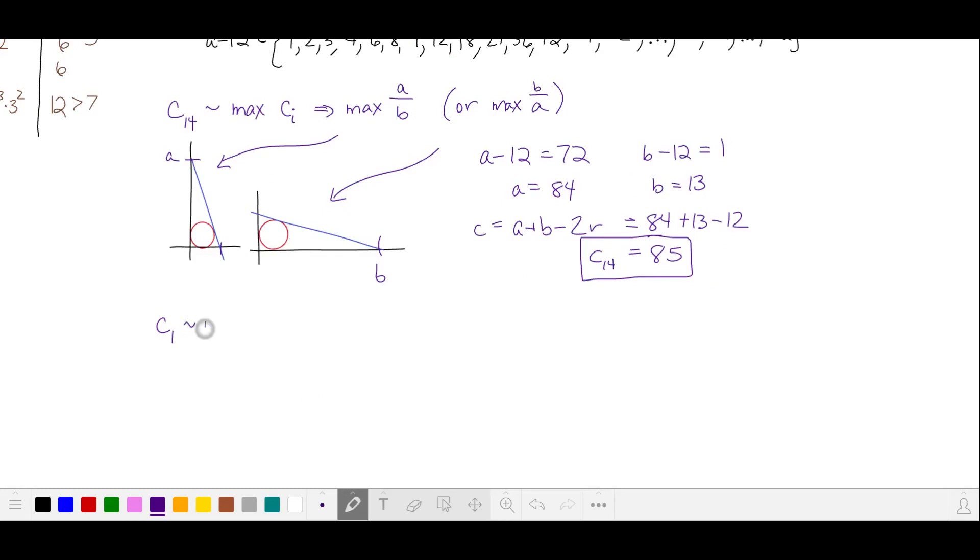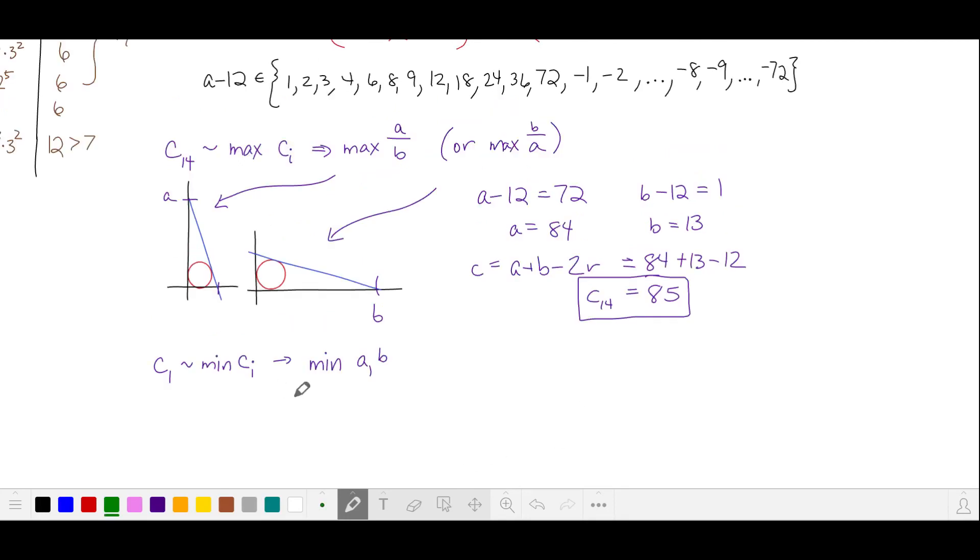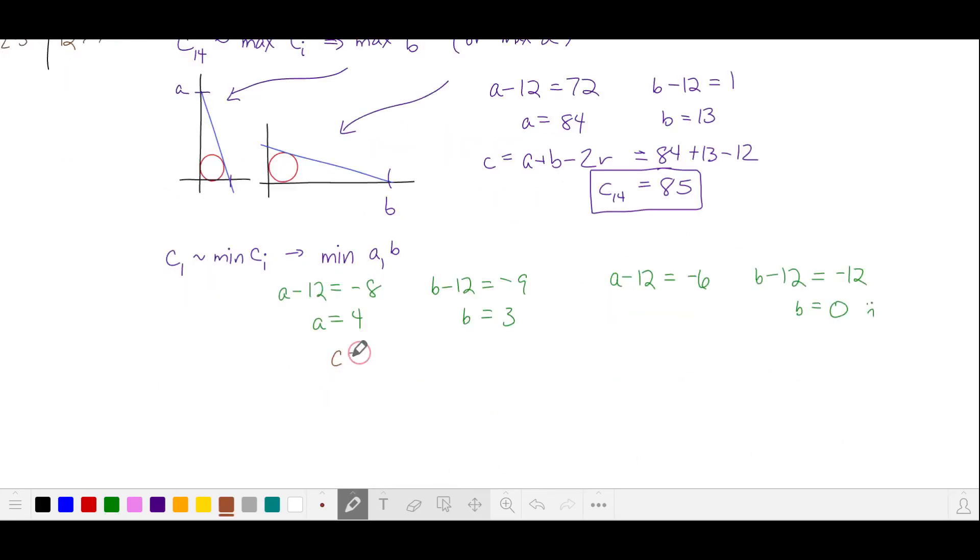Let's find C1, which is our minimum value of C. We get that when we find the smallest values of A and B. That'll happen when A minus 12 and B minus 12 are negative. Let's try A minus 12 is equal to negative 8, and B minus 12 is equal to negative 9. Here A is 4, and B is 3. Let's try the next product pair. We'll try A minus 12 is negative 6, and B minus 12 is negative 12. This gives us B 0, and we need this to be positive. From inspection, we can see here that C is equal to 5. That's C1.